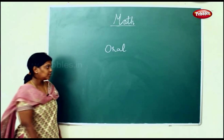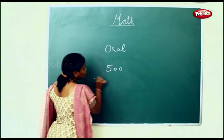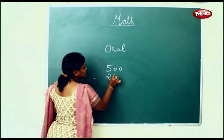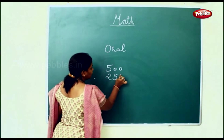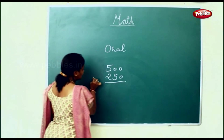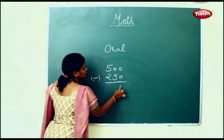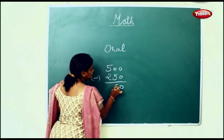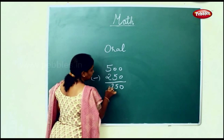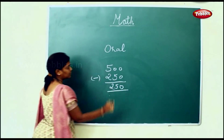In a shop, there are 500 shirts. 250 were sold out. We'll have to find the left out. Left out means a minus sign. So 250 will be left out.